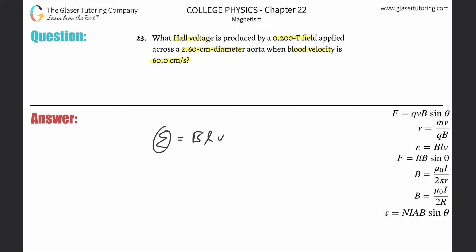Okay, so Hall voltage is known as the script E here, and it is a function of the magnetic field strength, the distance between the two parts of the conductor. In this case, it's the aorta. That's the diameter between the walls, and then the velocity of the moving particles.